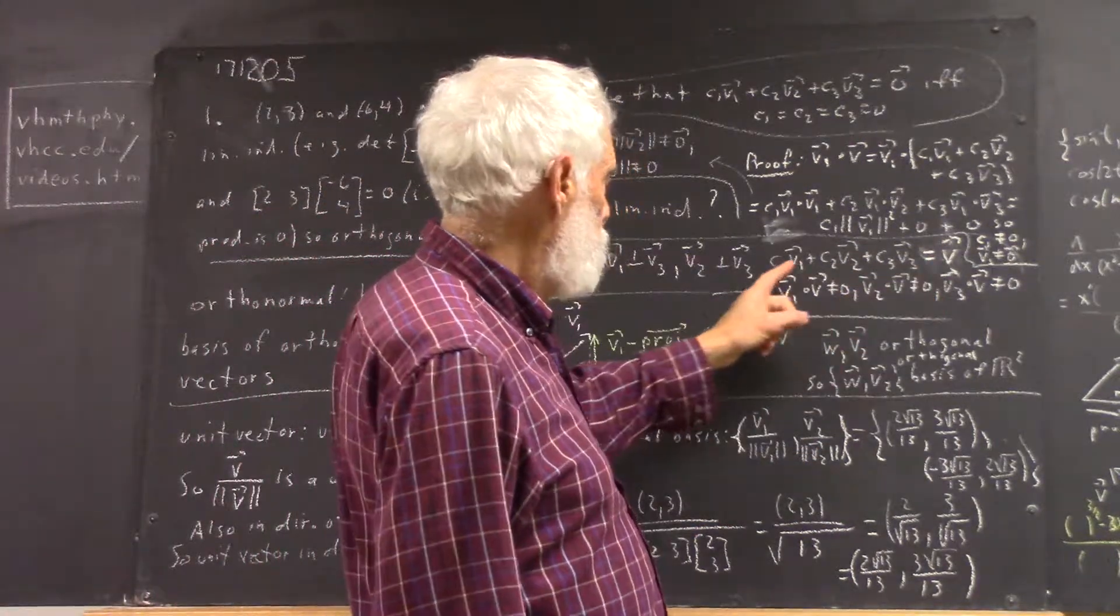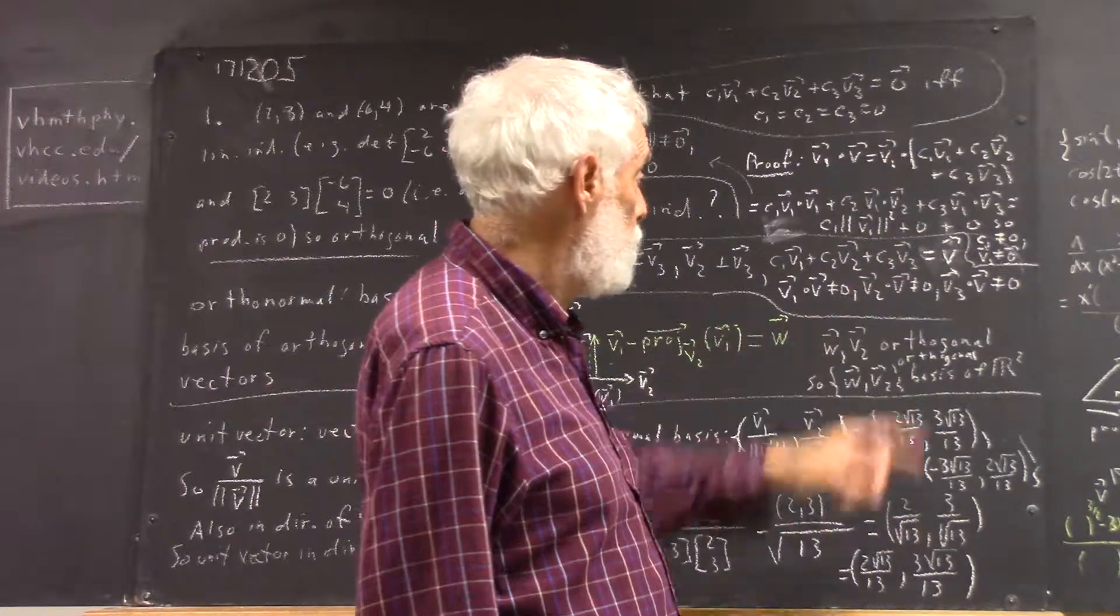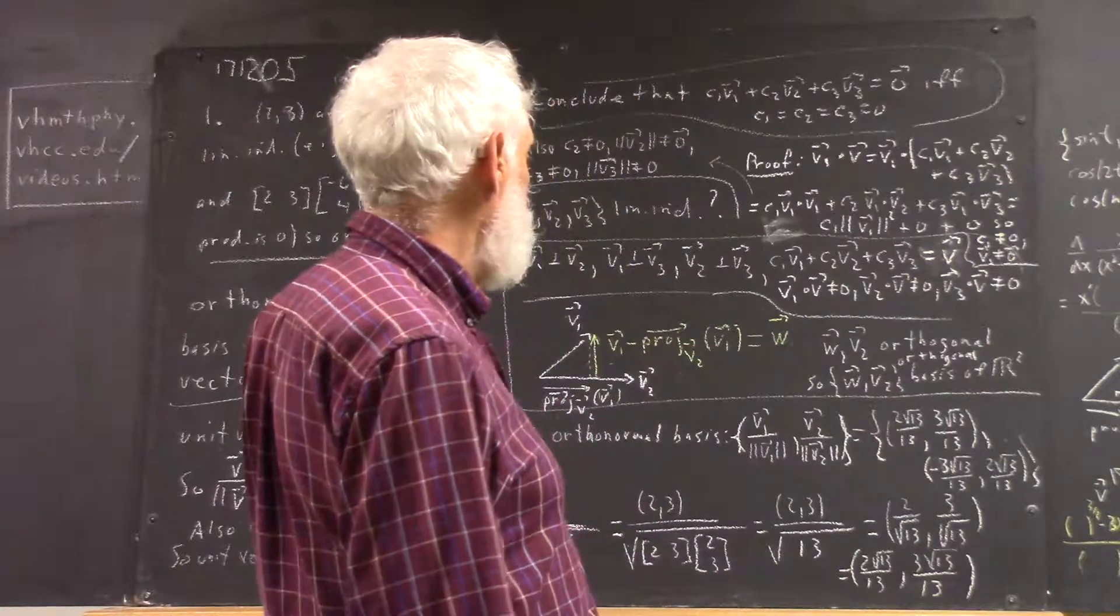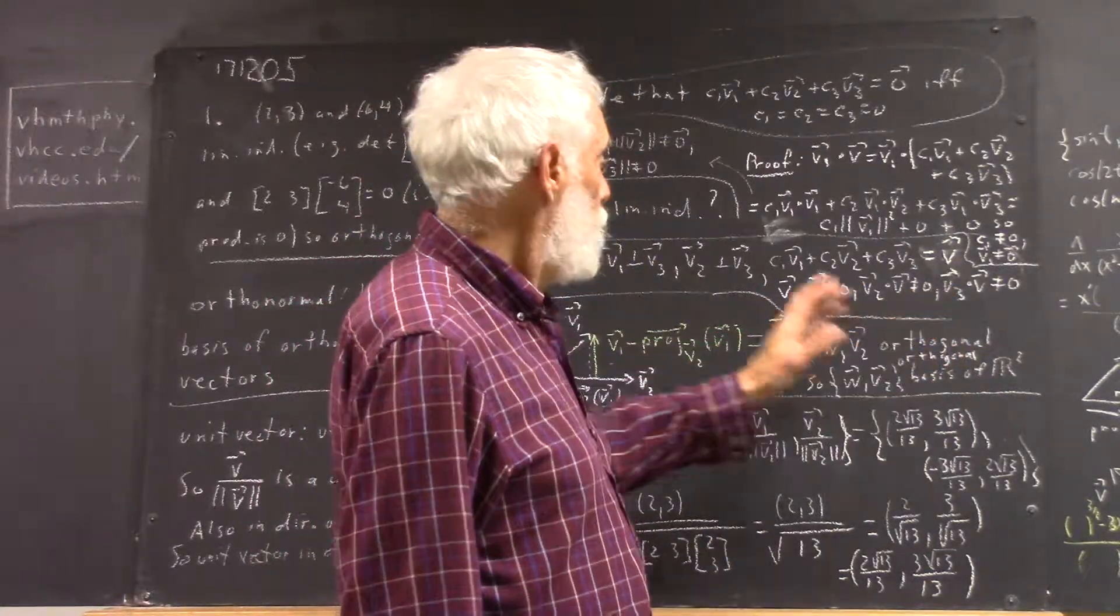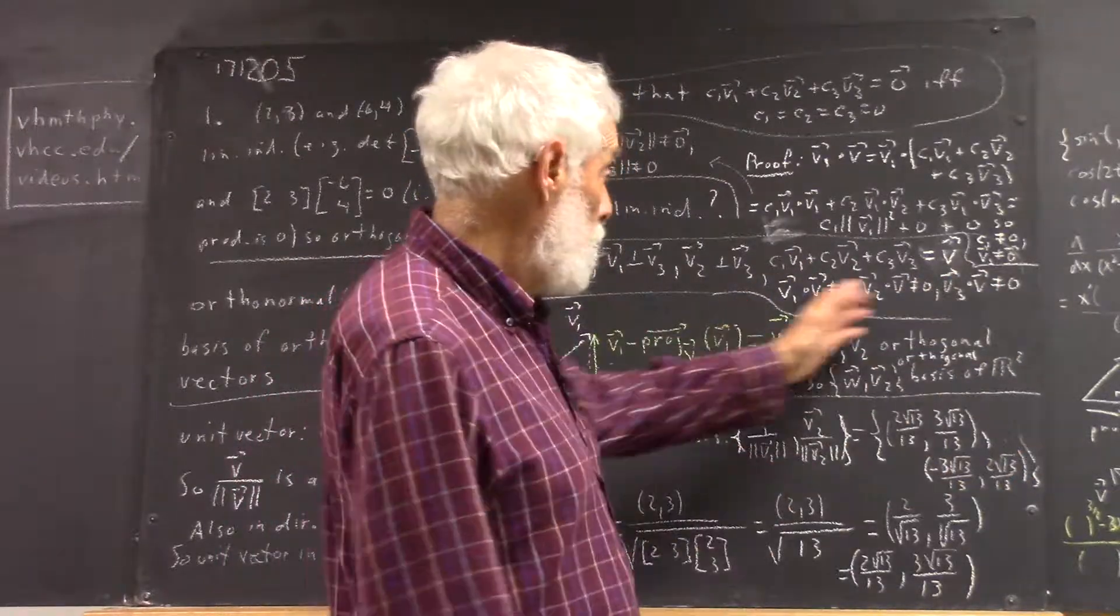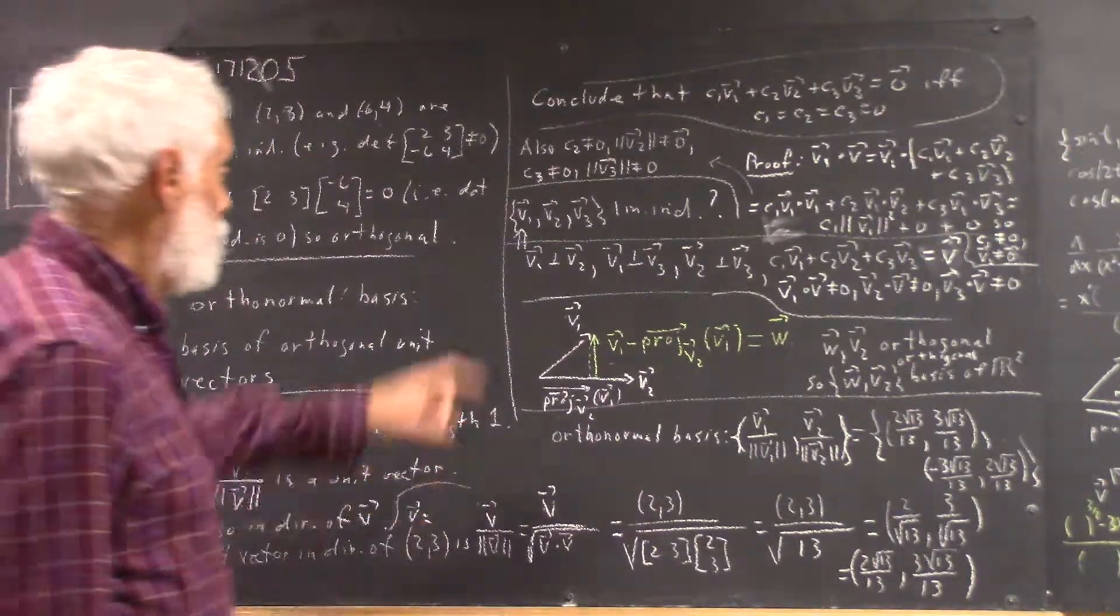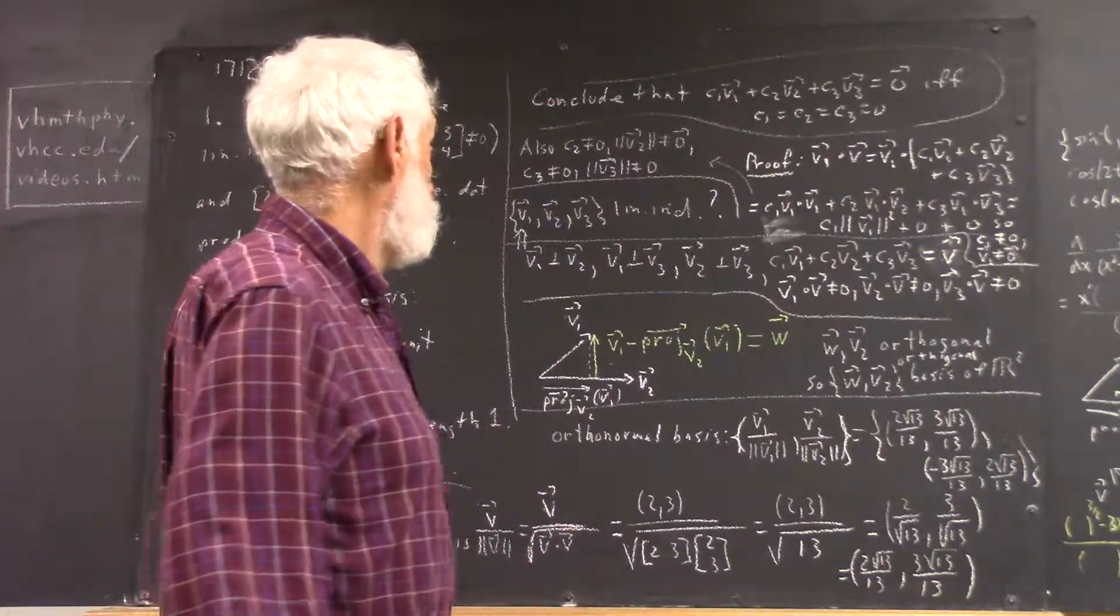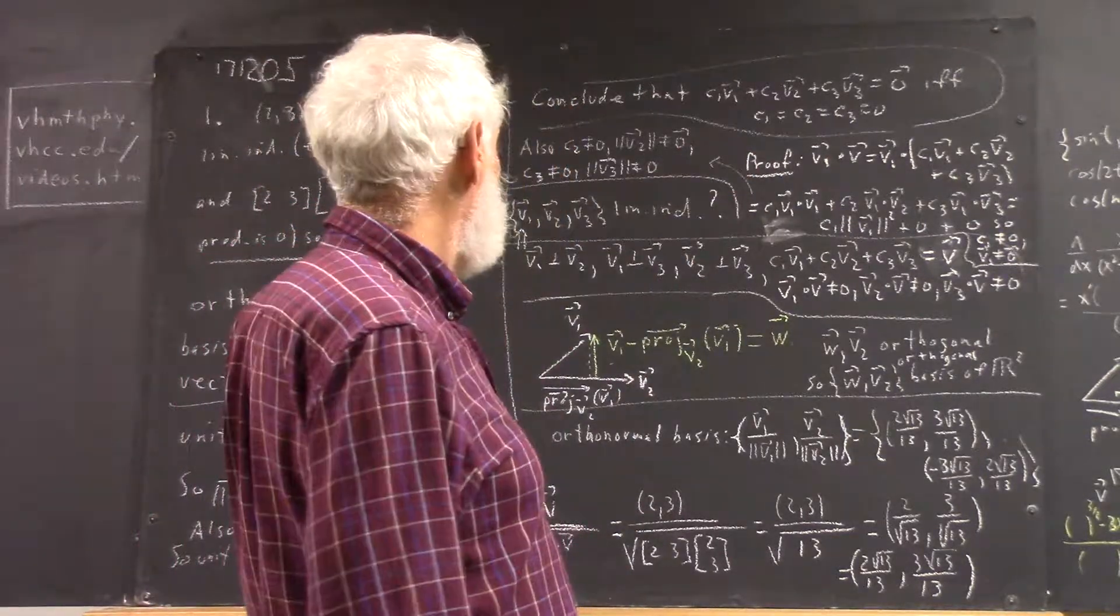And let v be the vector c1·v1 plus c2·v2 plus c3·v3, and let v have the property that its dot product with v1 or v2 or v3—that none of these dot products are zero. All these dot products are nonzero. Then we want to prove that v1, v2, and v3 are linearly independent.